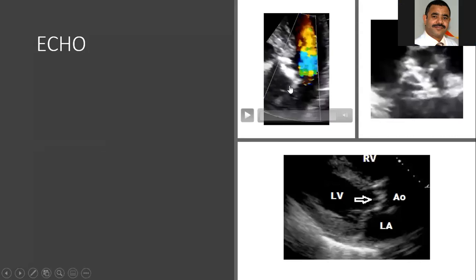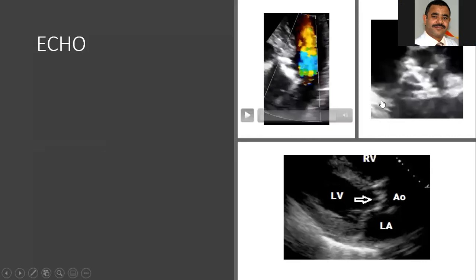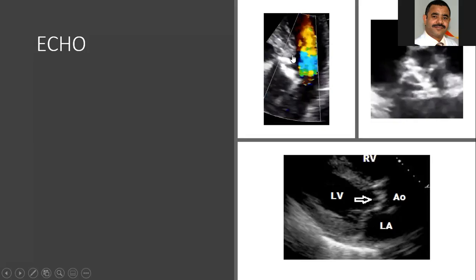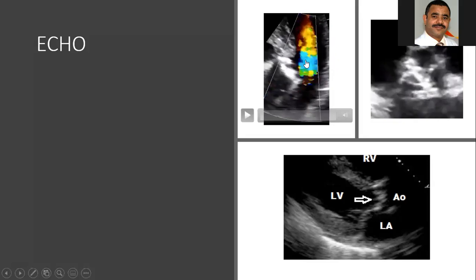Thank you, Abdurrahman. In the five-chamber view, we should always aim for the image to be as vertical as possible because of alignment. Here the alignment is toward horizontal, which will underestimate the gradient — the gradient equals the cosine of angle theta times the measured gradient. The angle theta should be between 0 and 20 degrees maximum. Here it appears to be more than 20 degrees, so we expect the gradient to be underestimated.